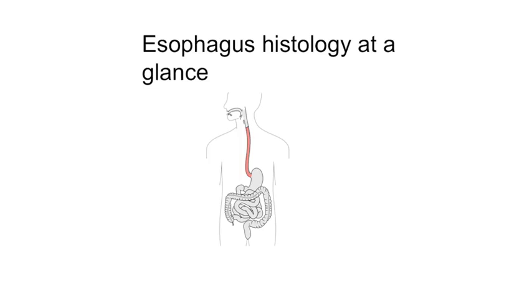Welcome. In this video, I will highlight some esophagus functions and connect them with the actual tissue layout. The esophagus is basically a collapsed muscular tube which carries food and drinks from the pharynx to the stomach in just seconds by peristalsis.